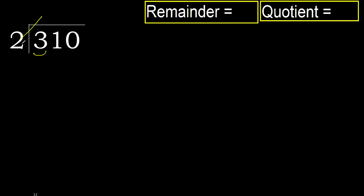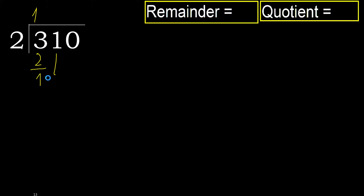2 multiplied by 2 is 4 — 4 is greater. 2 multiplied by 1 is 2 — 2 is not greater. 3 minus 2 is 1. Next.